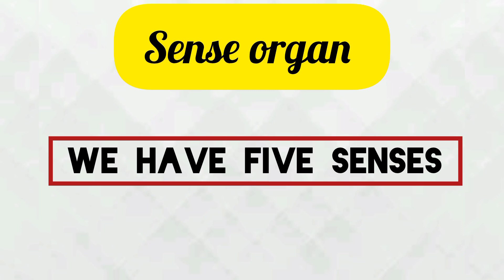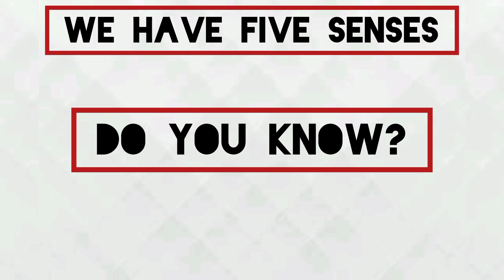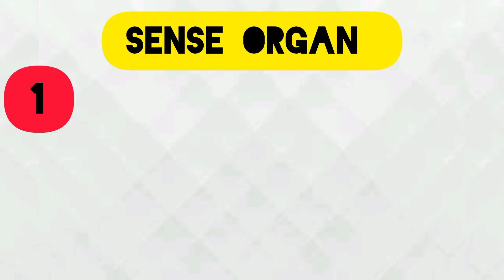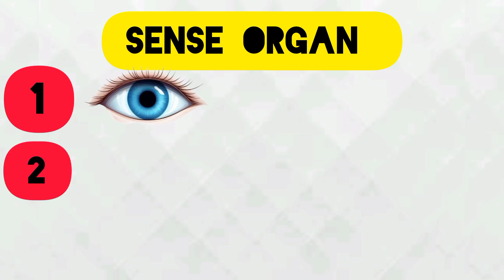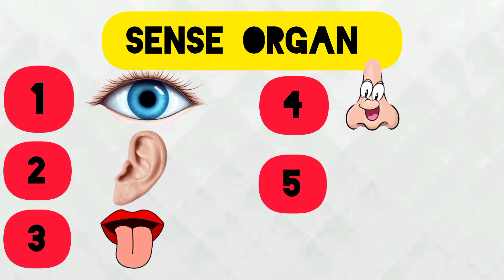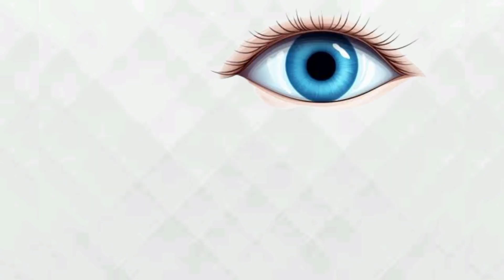Sense organs - we have five senses. Do you know, kids? First sense organ is eye, second is ear, third sense organ is tongue, fourth is nose, and last is skin. Now let's learn about the sense organs.